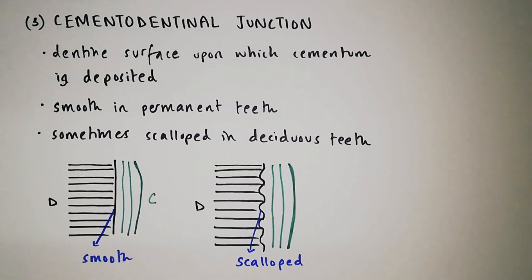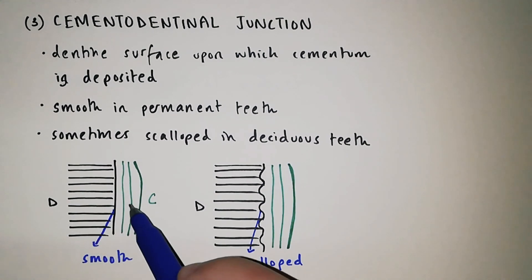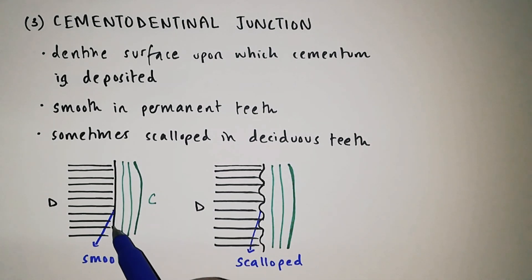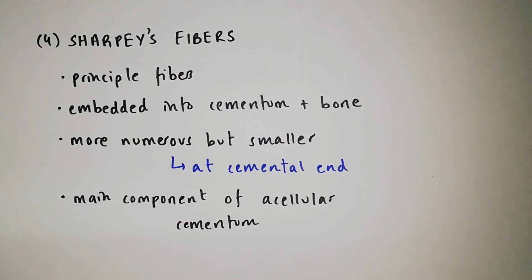The cemento-dentinal junction is formed when cementum is deposited upon the surface of dentine. It is smooth in permanent teeth and scalloped in deciduous teeth, with the convexities lying towards the layer of dentine. Sharpey's fibers are the principal fibers embedded into cementum and bone. They are more numerous but smaller at the cemental end and form the main component of acellular cementum.